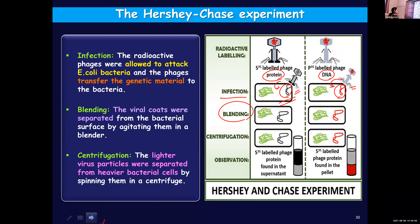The next step is centrifugation. Centrifugation is a process where these components are rotated at high speed and the different particles get separated on the basis of density and size. They were subjected to centrifugation. Upon centrifugation, lighter particles get separated from heavier particles — lighter particles occupy the top layer and heavier particles settle at the bottom.